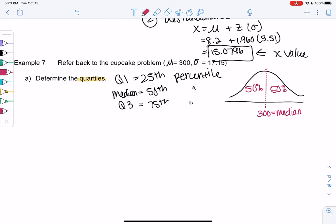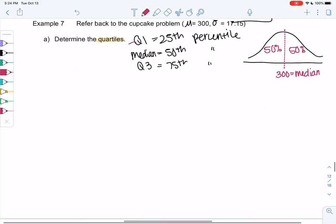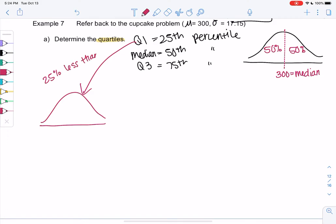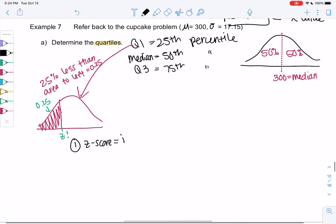We're really more interested in Q1 and Q3. So let's start with Q1. So 25th percentile means 25% less than, which means area to the left is 0.25. So we know the area is 0.25 for 25%. We don't know the z-score or the data value. So we're going to find the z-score and then we're going to de-standardize.